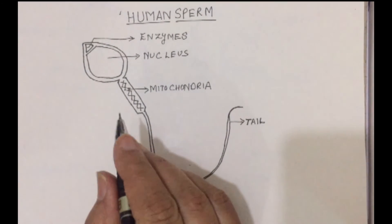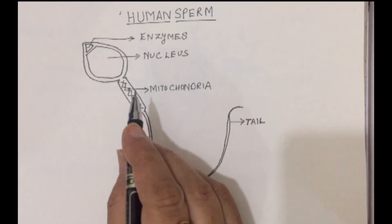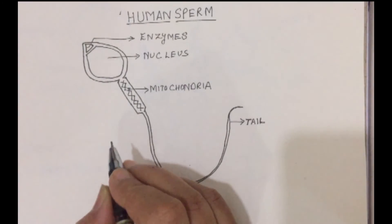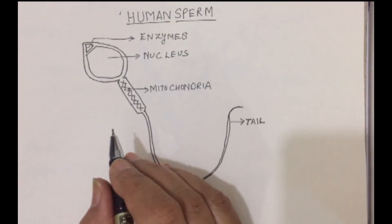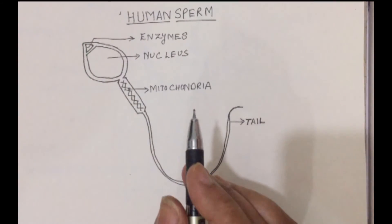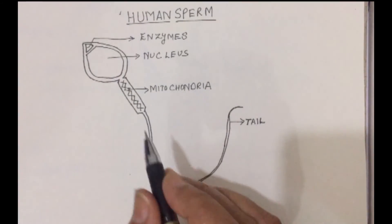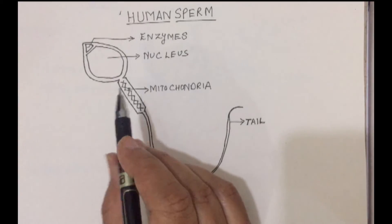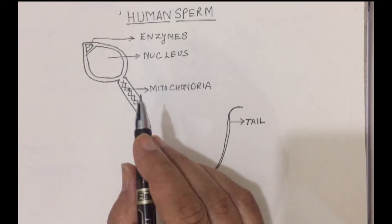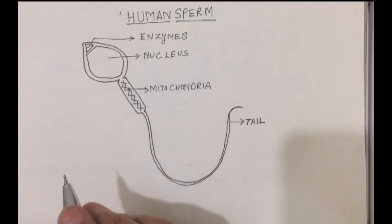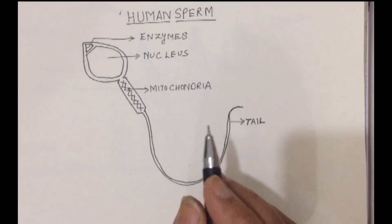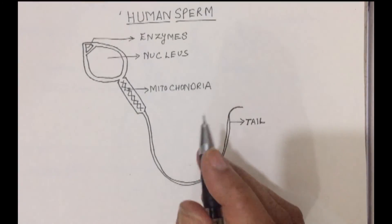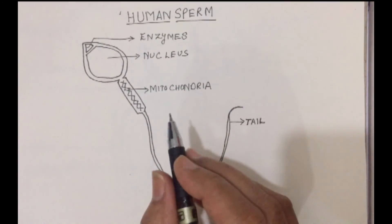This is why — because the passage is long — millions of sperms are secreted. This is unlike the ovum, which is secreted only once a month and only one in number. But human sperms are secreted in numerous amounts.